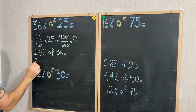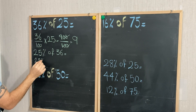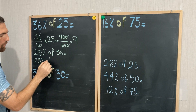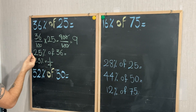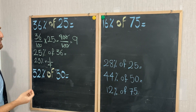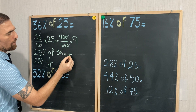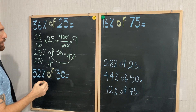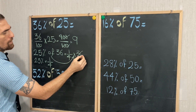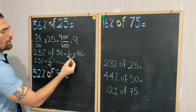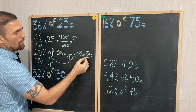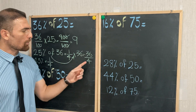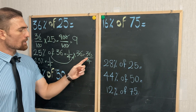And 25 percent is the same as one-fourth, or 1 over 4. So 25 percent of 36 is going to be 1 over 4 of 36, which means 36 over 4. How much time do you need to solve this division — 36 divided by 4?